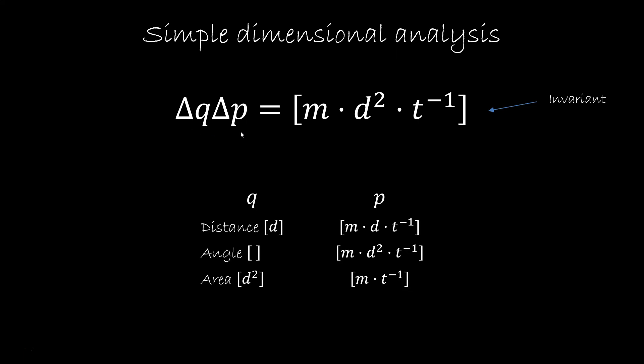If we do a bit of dimensional analysis, we see right away we have a problem. Delta q delta p has dimensions of mass times distance squared and inverse time. Now delta q delta p is invariant, so it has to have the same dimensions no matter what q is. Since we can pick q to represent different quantities, p needs to change accordingly.